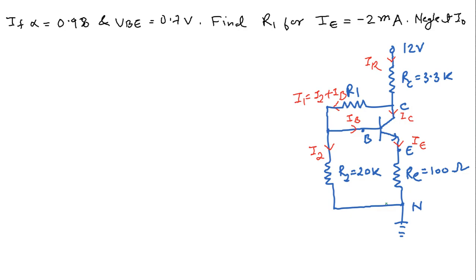We have to neglect the reverse saturation current I0. The circuit is given in the figure. We have R2 equal to 20 kilo ohm, RE is 100 ohm, RC is 3.3 kilo ohm, and VCC is 12 volt.